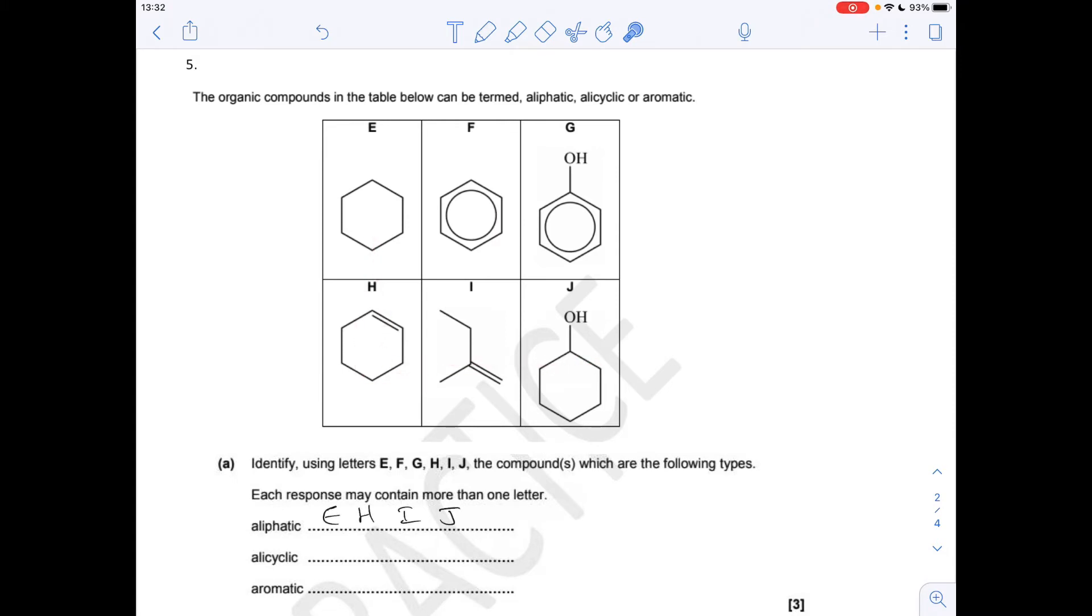Alicyclic, well, that's a ring, but it can't be a benzene ring. So we've got 1, 2, 3, 4, 5 rings, but these aren't alicyclic because they're aromatic. So these are your alicyclic ones, and they're your aromatic ones.